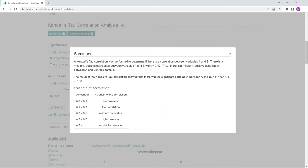The result of Kendall's Tau correlation analysis showed that there was no significant relationship between A and B. This is because the calculated p-value of 0.188 is greater than the significance level of 0.05. Thanks for watching and I hope you enjoyed the video.